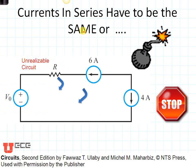Currents in series have to be the same or else something blows up. So this circuit that's right here, you can see we have a six amp in series with a four amp. That's an unrealizable, impossible circuit. This can't happen or else the circuit would blow up.